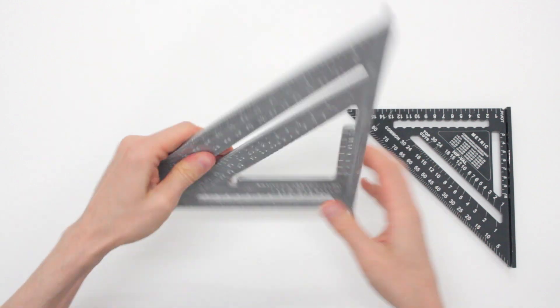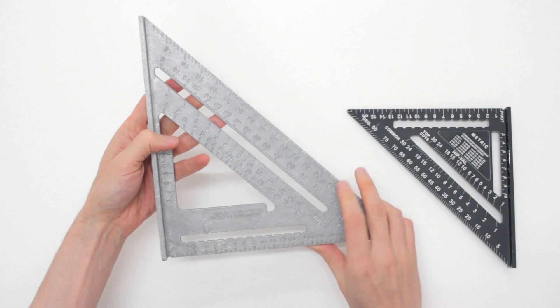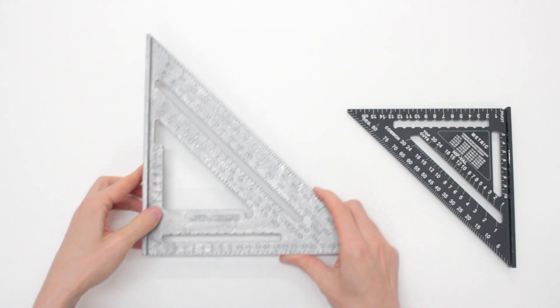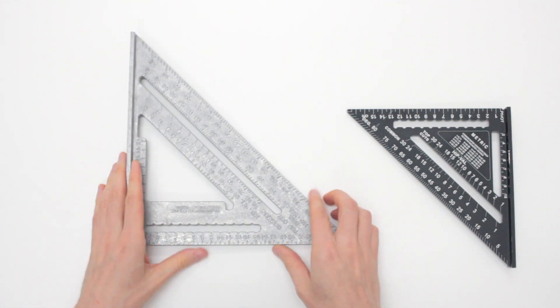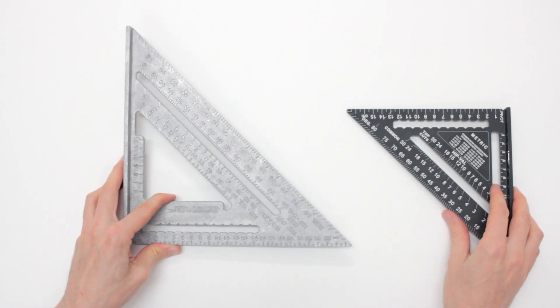Of course, because they are recessed, they're very durable, they will stay there, but I can't see them as well as with the original 7-inch Swanson's speed square.